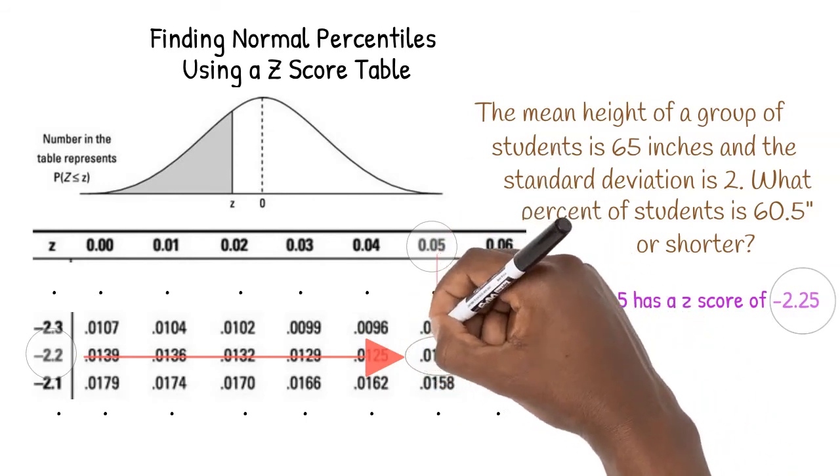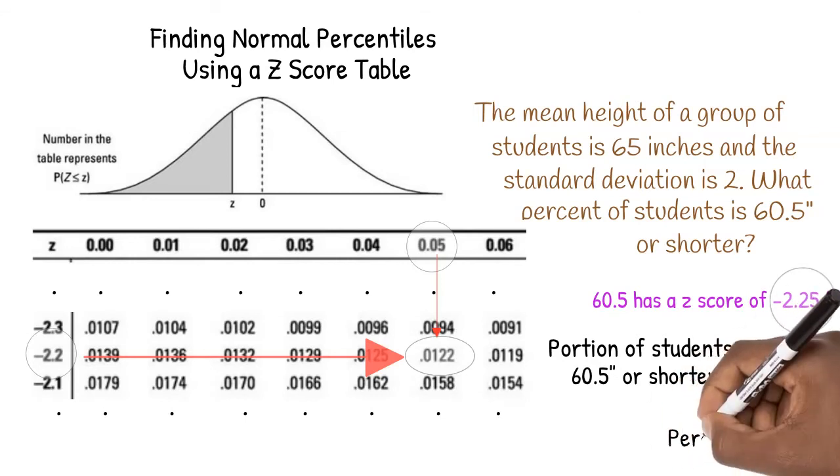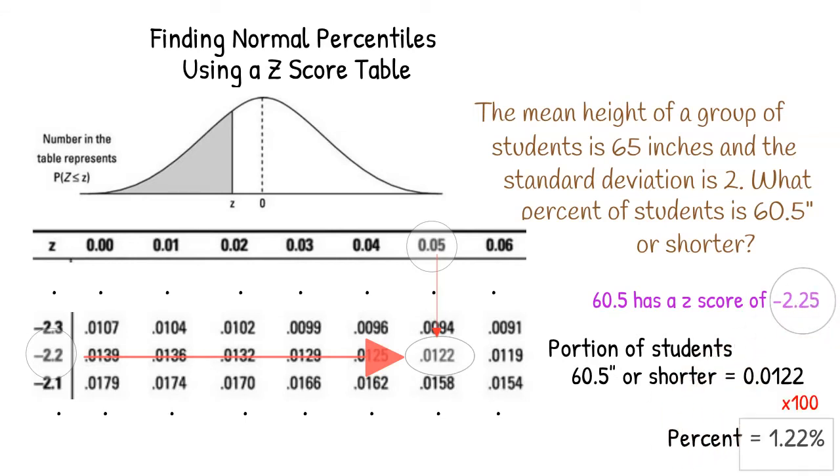The portion of students 60.5 inches or shorter is 0.0122. We multiply that by 100 to turn it to a percent and get that 1.22 percent of students are 60.5 inches or shorter.